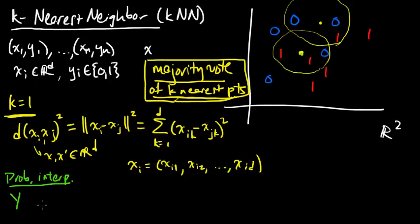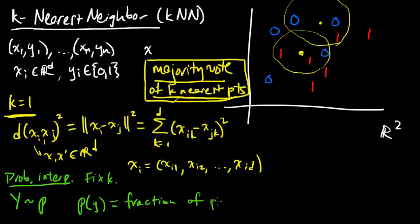Define a random variable y with PMF p, where p of a value little y equals the fraction of points. So we'll fix k, we fix our data, we fix some point, fix k, and this is the fraction of points, let me call Nk(x) to be these nearest points, these three nearest points in this case when k is 3.